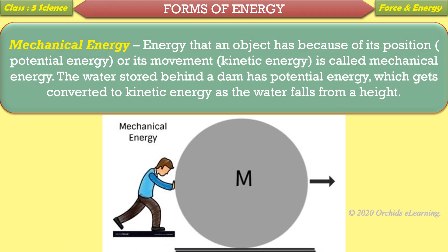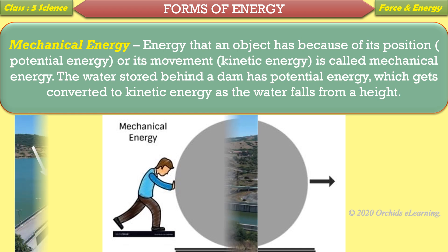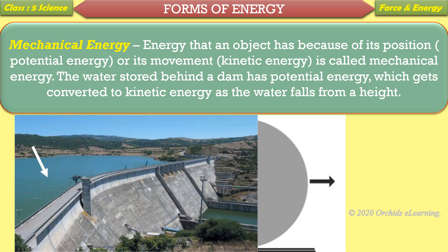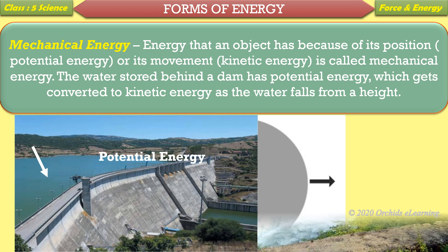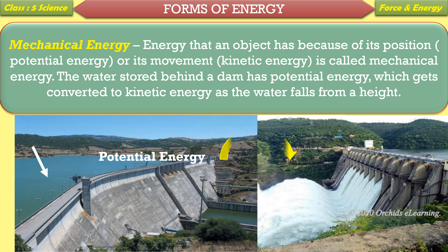Mechanical energy: Energy that an object has because of its position (potential energy) or its movement (kinetic energy) is called mechanical energy. The water stored behind a dam has potential energy, which gets converted to kinetic energy as the water falls from a height.